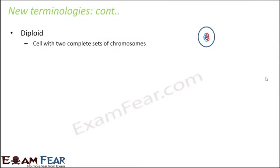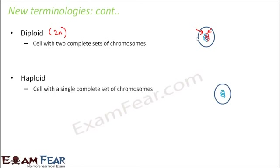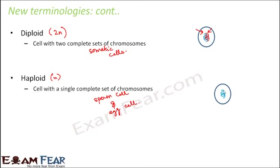Diploid refers to a cell that has two complete sets of chromosomes, represented as 2n. All the cells of our body are diploid because they have two sets of chromosomes — one set from the father and one from the mother. Haploid refers to a cell with just a single set of chromosomes. All somatic cells are diploid, while examples of haploid cells are the male and female gametes — the sperm cell and the egg cell.